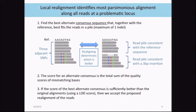Local realignment identifies a more parsimonious alignment of a group of reads against the reference. When we've taken these reads individually and mapped them to the reference genome, we appear to have three adjacent SNPs. But if we use a multiple sequence alignment, this data can also be explained as a deletion. We can then decide which alignment better explains the data — in this case, a deletion.